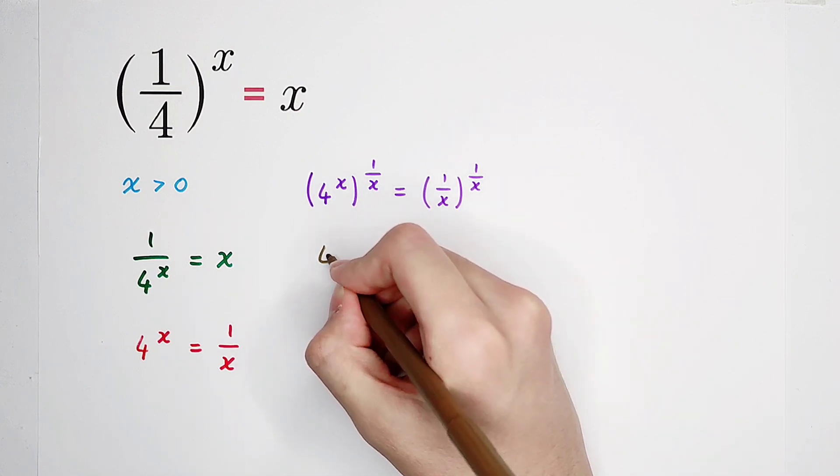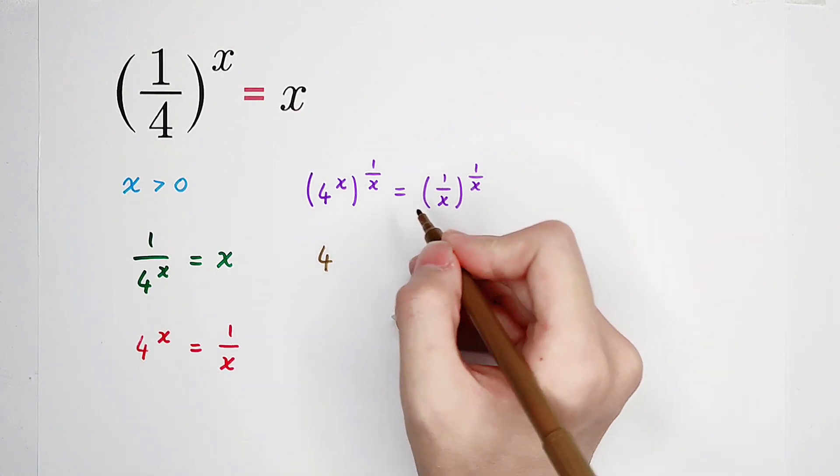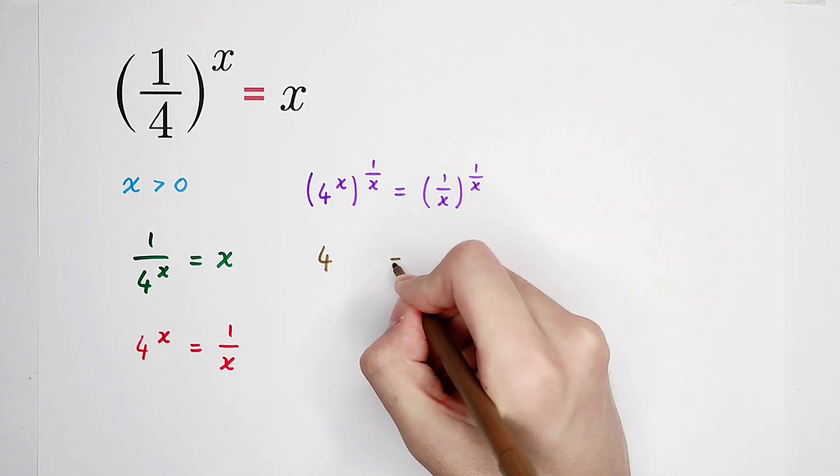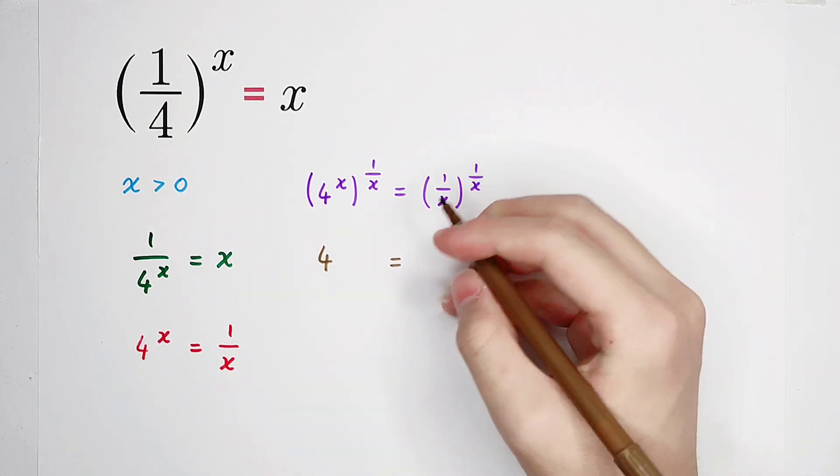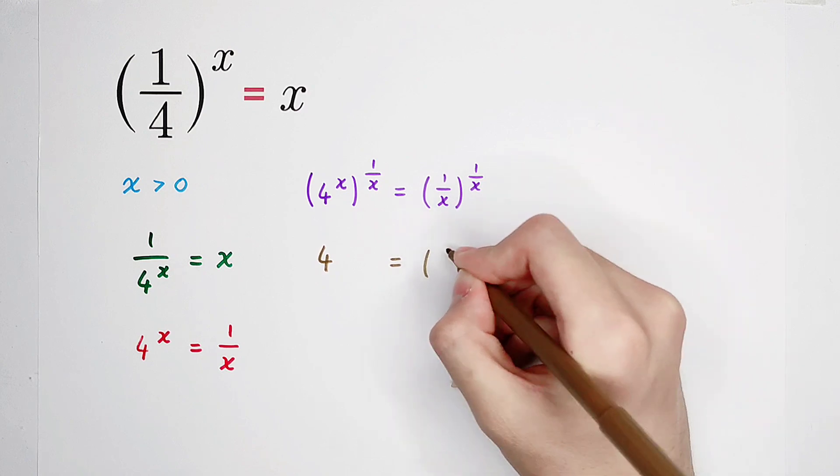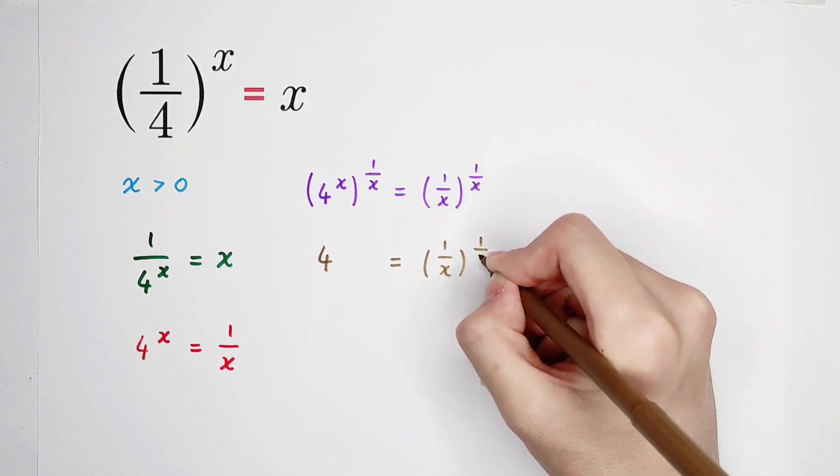So here, it is four to the power of x times one over x, so it is one. The left-hand side is four. And the right-hand side is one over x to the power of one over x.